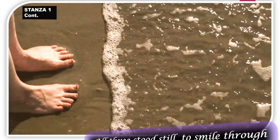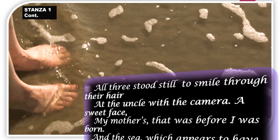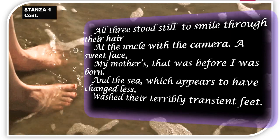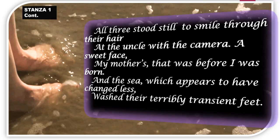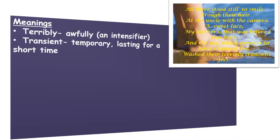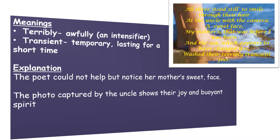The next few lines of stanza one are: 'All three stood still to smile through their hair at the uncle with the camera. A sweet face, my mother's, that was before I was born, and the sea which appears to have changed less washed their terribly transient feet.' The photograph shows that all three girls stood still, motionless, and smiled at the camera. The poet could not help but notice her mother's sweet face. The sad thing is the photograph was taken long ago, and now the years fled past — her mother grew up and they all underwent changes, while the sea remained unchanged.